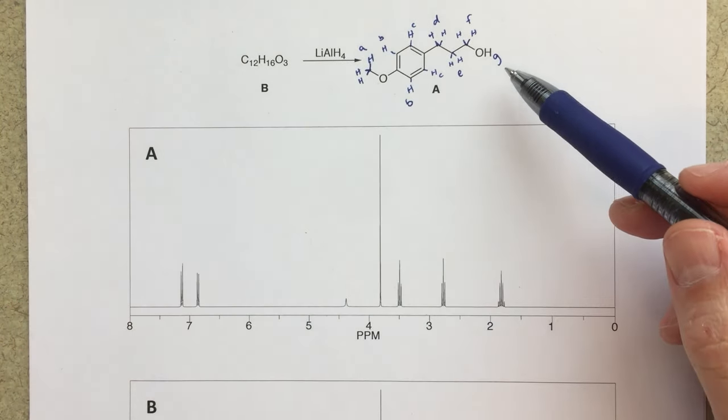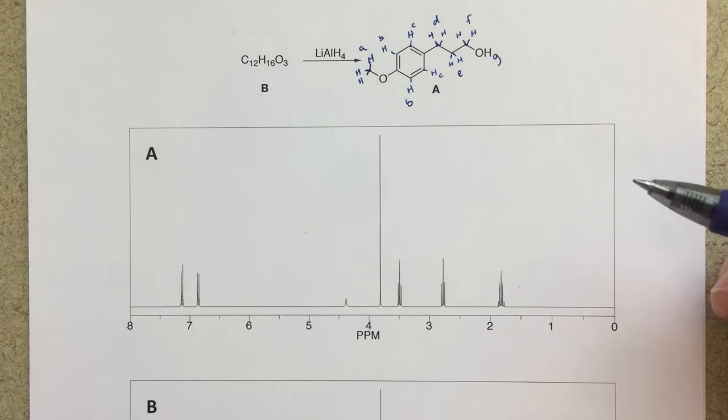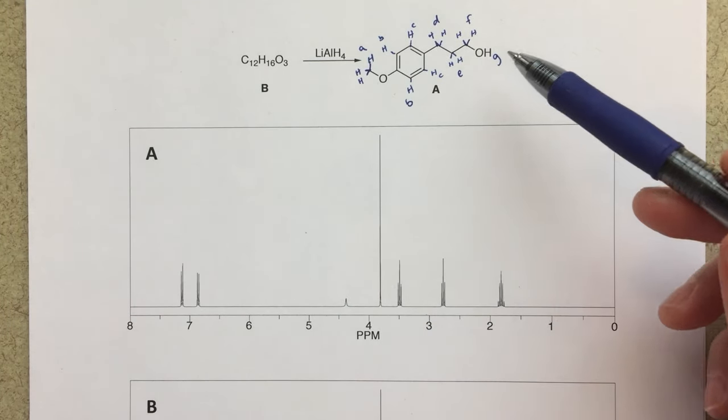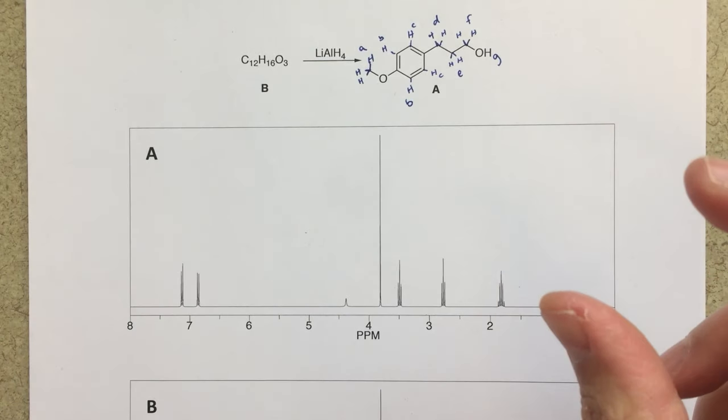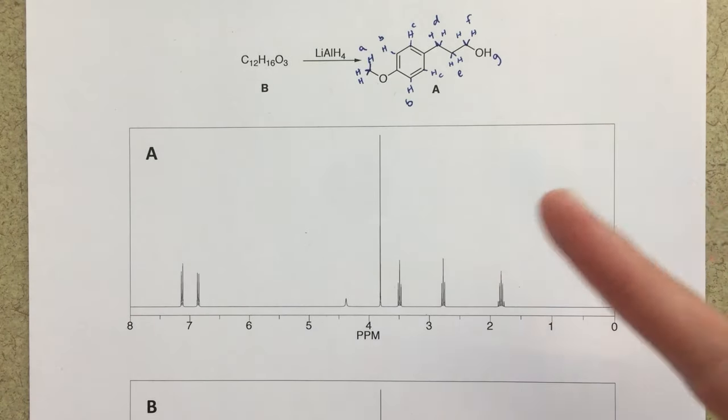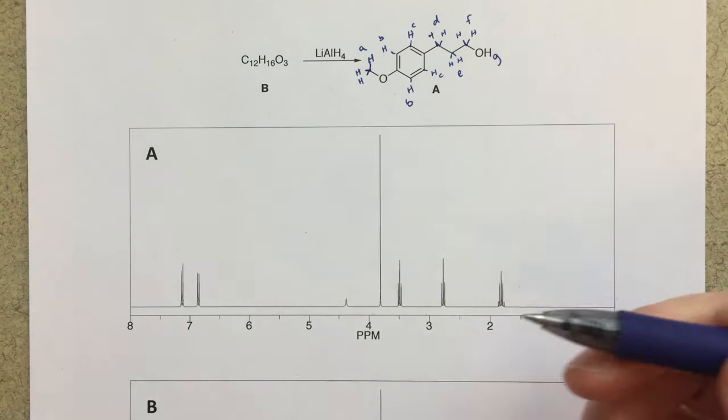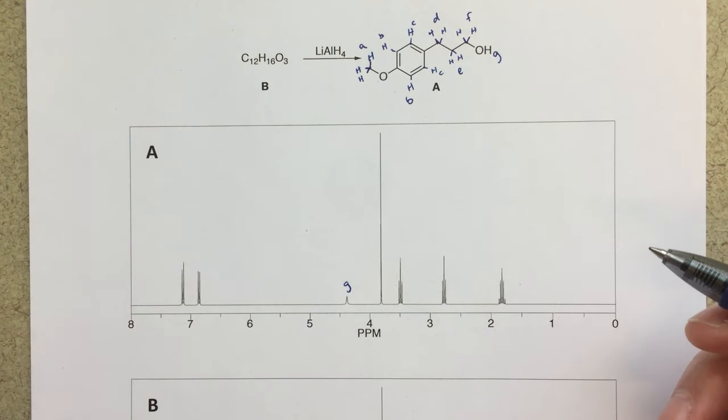Now this OH proton, you may or may not see a peak for that, depending on what solvent you're in, and in this solvent, whatever this NMR was generated from, we do see that peak, that's going to be this little peak here. We would expect that to be broadened. Those OH peaks oftentimes, especially if there's some exchange happening, those are going to be little broad peaks, and that's what we see here. So I guess we'll go ahead and label that here. So that's going to be G, one H singlet.